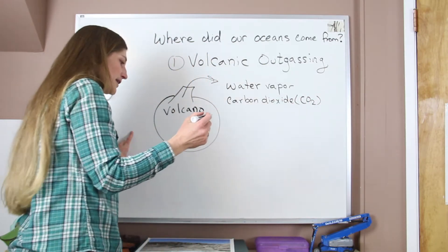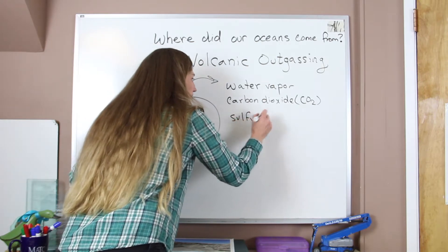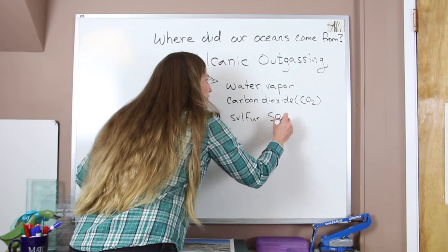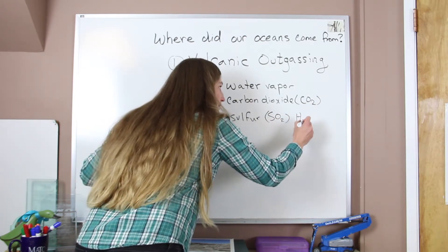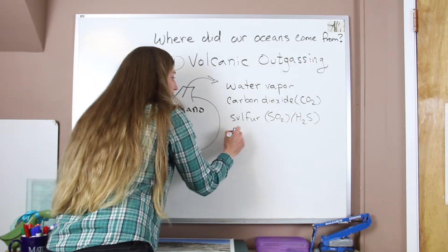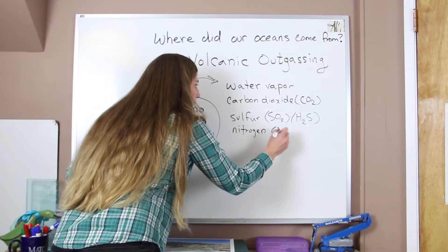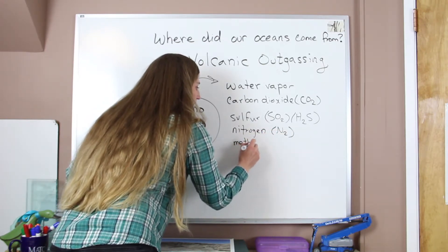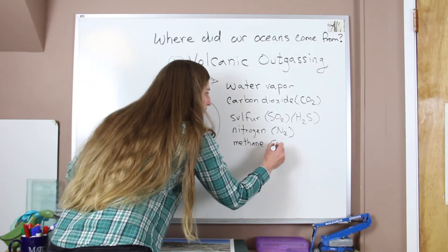So our CO2. Other gases that we have include a lot of sulfur, and that is both as sulfur dioxide and hydrogen sulfide gas. We do have lots of nitrogen and some methane. There are other gases as well, but these are the ones we're just going to list for today.